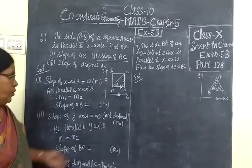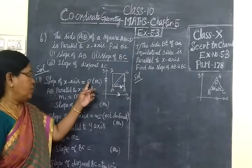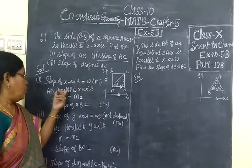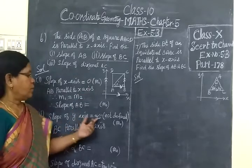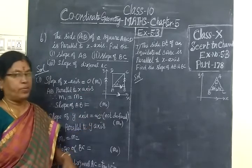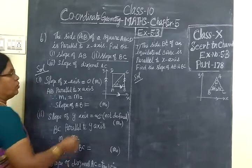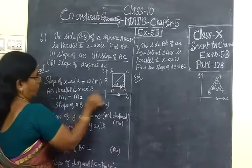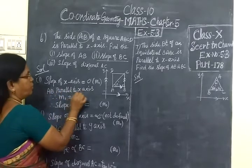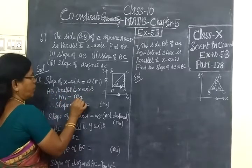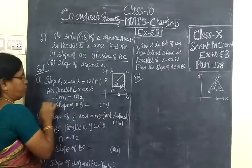We know the formula. Slope of X axis is 0. It is given in the book. Slope of Y axis is infinity. Infinity means undefined. It is not defined. So parallel is parallel. And the two lines of slope is equal. AB is parallel to X axis. So M1 equal to M2. This is parallel is given.